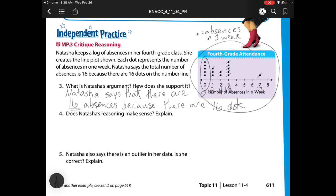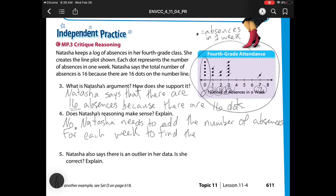So now let's check. Does it make sense that there are 16 absences? Well, no, because she missed 3, 4, 15, and 7. So we have to add up her absences. Her reasoning does not make sense. Natasha needs to add the number of absences for each week to find the total. So we have 0 plus 3 plus 4 plus 15 plus 7. All together, she has 29 absences.